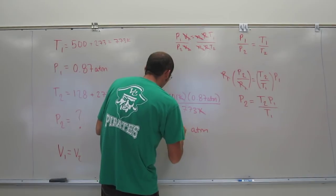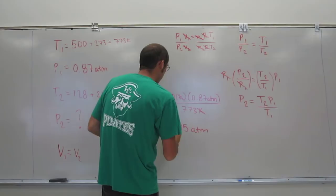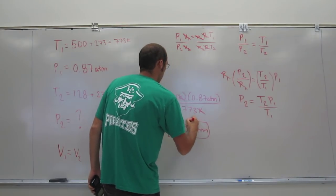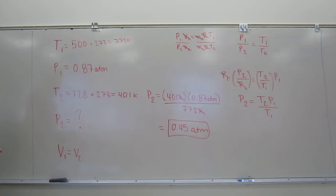So when I get it, I get 0.45 atm. Is that what you get? Does it make sense?